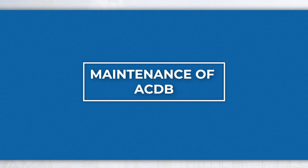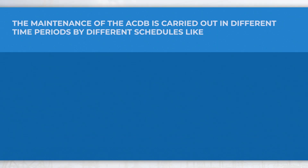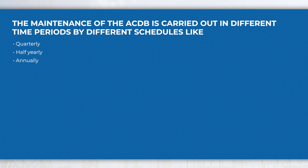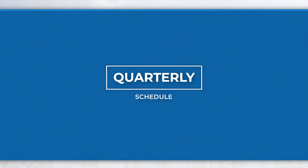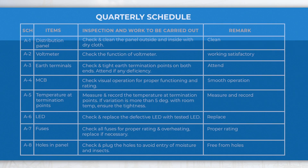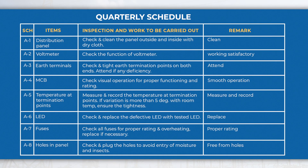The maintenance of the ACDB is carried out in different time periods by different schedules like quarterly, half-yearly, and annually. In the quarterly schedule, perform activities like measuring the temperature at termination points and checking the condition of fuse, etc.